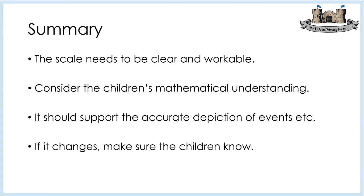On to the summary. Number one: the scale needs to be clear and workable. If the children can't count in that number, then understanding what it represents is going to be harder — consider the children's mathematical understanding. You might get children to position events on the scale, but as the adult you need to make sure it's done accurately and that you don't spend half a lesson on something you could do in seconds. Number two: it should support the accurate depiction of events, because it's going to help the children organise their understanding of that person's life or that period of history. Number three: if the scale changes, make sure the children know, because quite often they won't notice unless we make it explicit.